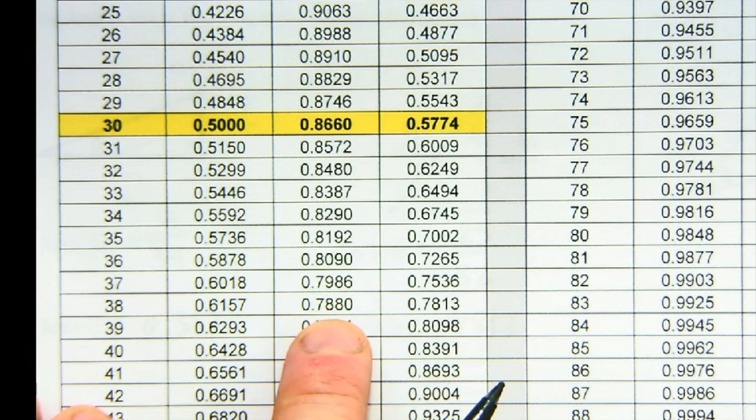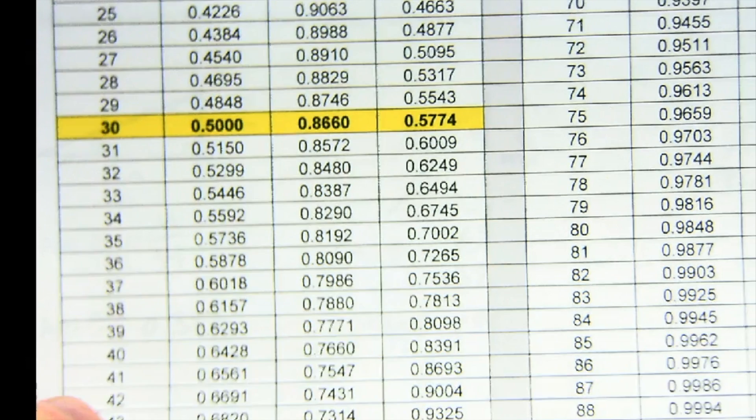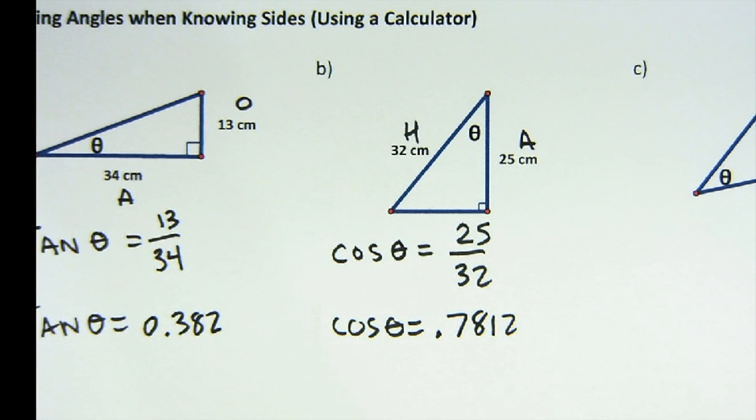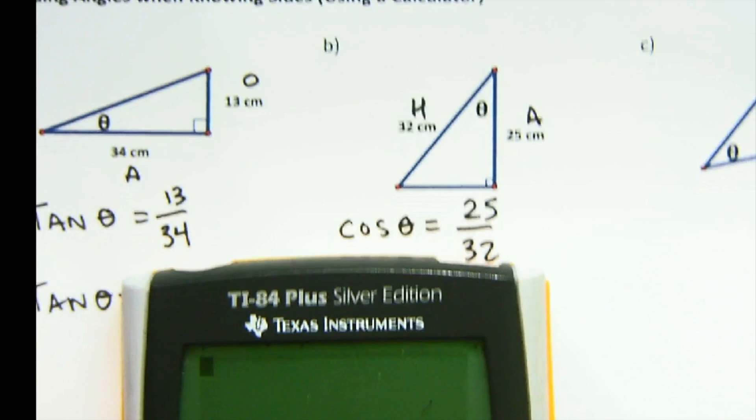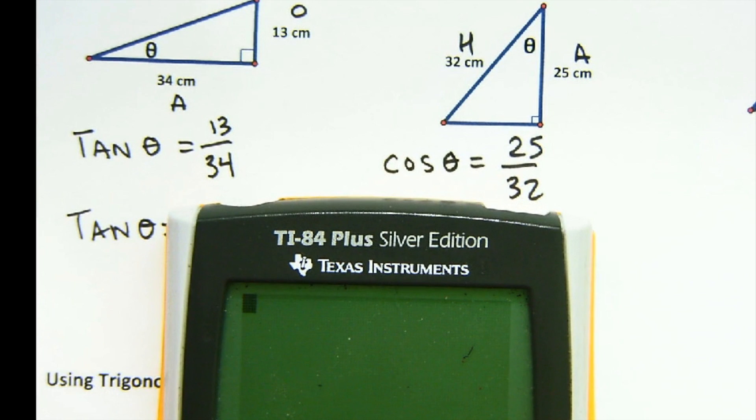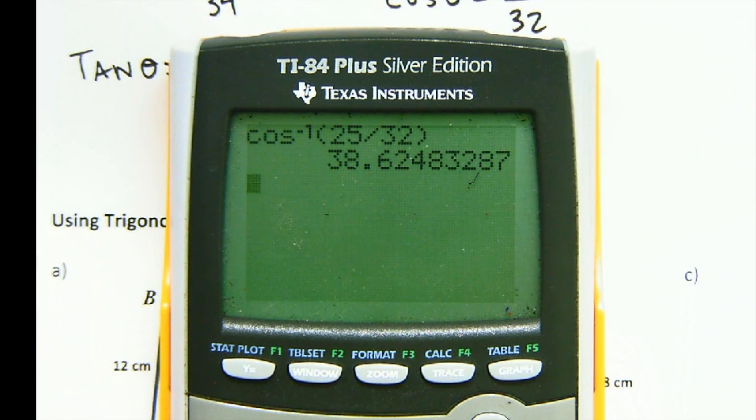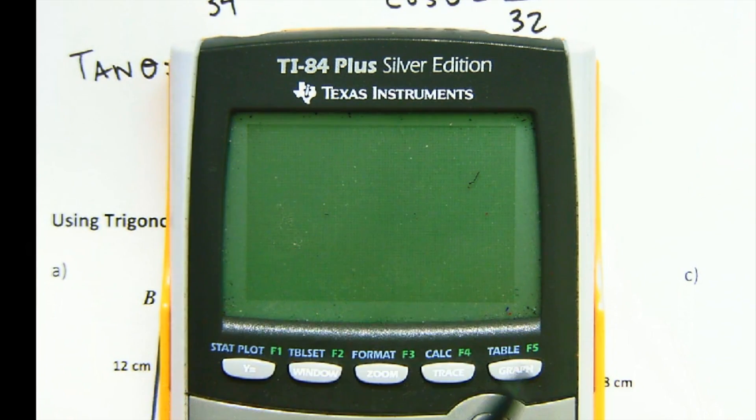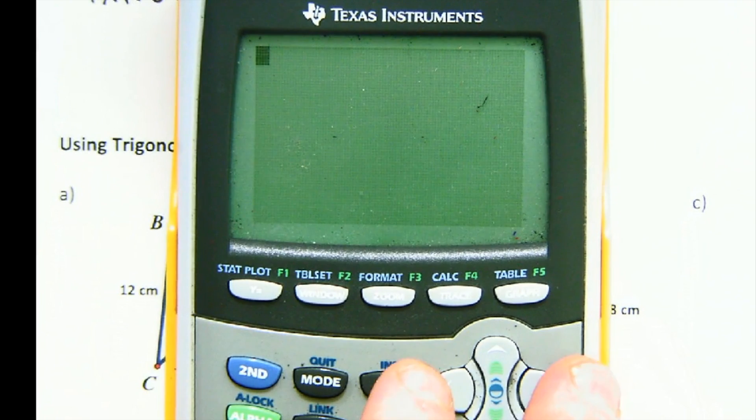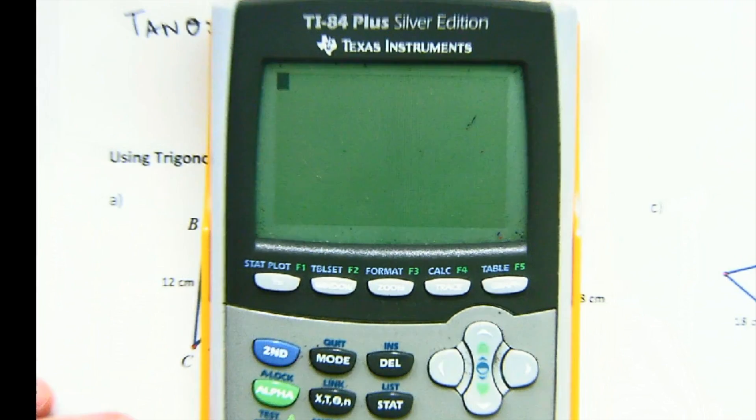So let's see what our calculator tells us to see if it tells us the same thing. So I'm going to put her down there and slide this up and again when you're finding the angle you hit second cosine for the inverse of 25 divided by 32 and there's our value that we were looking at, very close to the 38 that we were looking at.